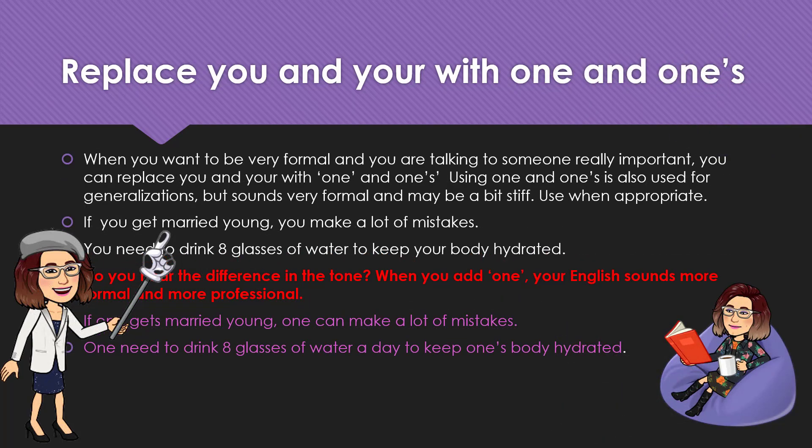When you want to be very formal and you are talking to someone really important, you can replace you and your with one and ones. Using one and ones is also for generalization, just like with people, but it sounds very formal and maybe a bit stiff, so use one and ones when appropriate. For example: 'If one gets married young, one can make a lot of mistakes' and 'One needs to drink eight glasses of water a day to keep one's body hydrated.'